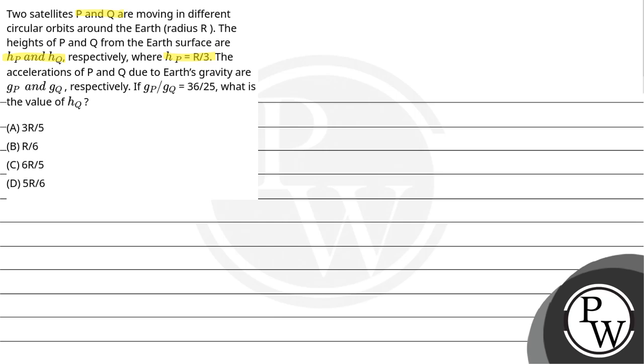The acceleration of P and Q due to earth's gravity are GP and GQ respectively. If GP upon GQ is equal to 36 by 25, what is the value of HQ?